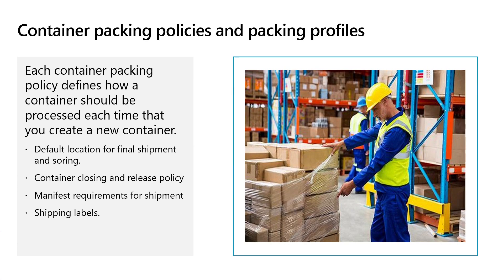The third step in the configuration list is to define the packing policies and packing profiles. Using packing policies and packing profiles, you can define how the container should be processed each time you create a new container. For example, using the packing policies, you can specify a default location for final shipment where the container will travel after it is closed. You can also specify a default sorting location if the outbound sorting process is used. You can define the container closing and release policy — once the container is closed, you can define whether it should be moved directly to the bay door location or if a work should be created to move it from the packing location. If the outbound sorting process is used, you can assign the container to an outbound sorting position, define the manifest requirement, and configure when the shipping labels and packing slip should be printed.